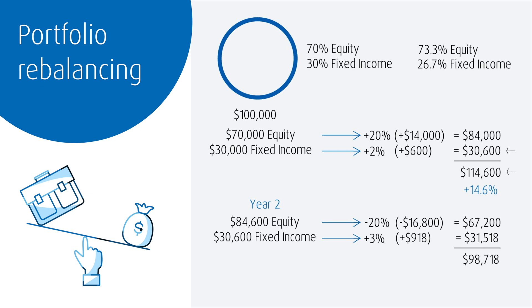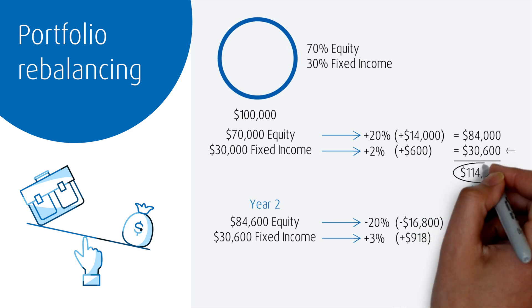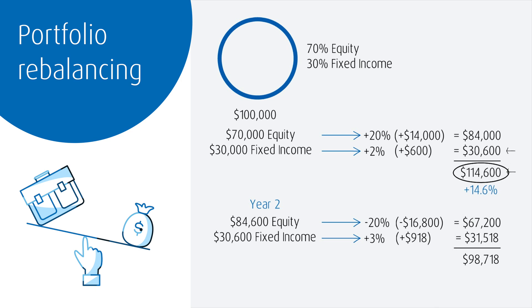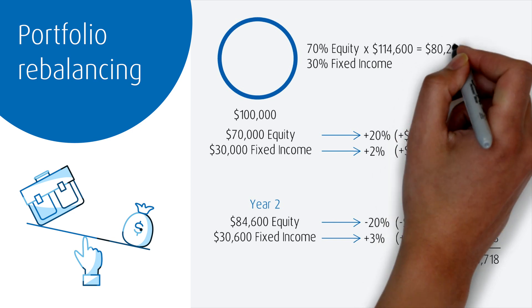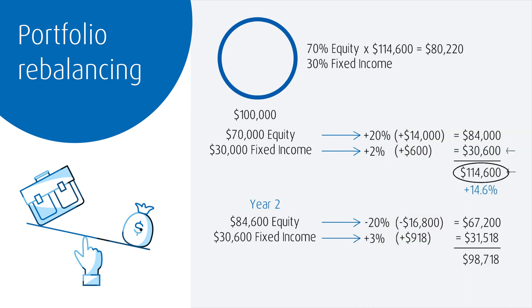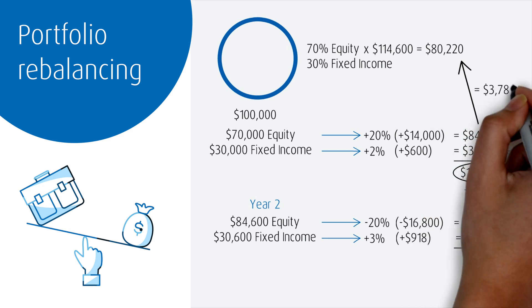But what if we had rebalanced our portfolio after that first year? Rebalancing would bring our asset allocation back to 70% equity and 30% fixed income, and we could do this by selling some equity and buying some fixed income. Our portfolio value at the end of one year was $114,600. 70% of $114,600 equals $80,220. Since we had $84,000, we would need to sell the difference: $84,000 minus $80,220, which gives us $3,780.